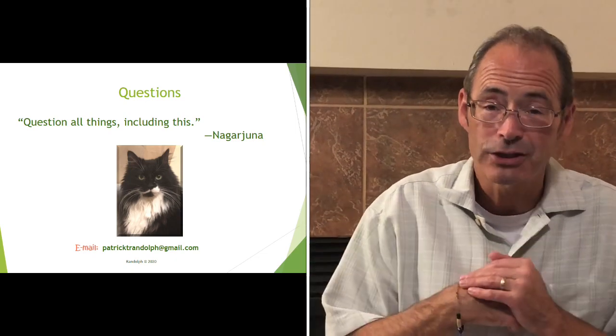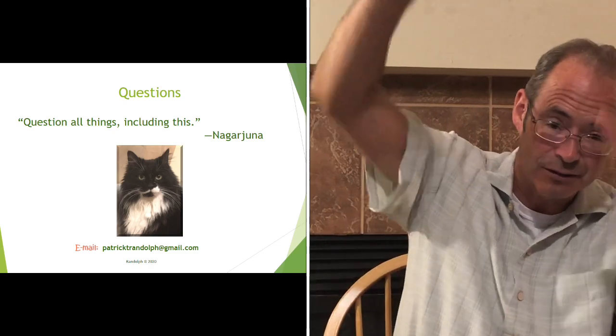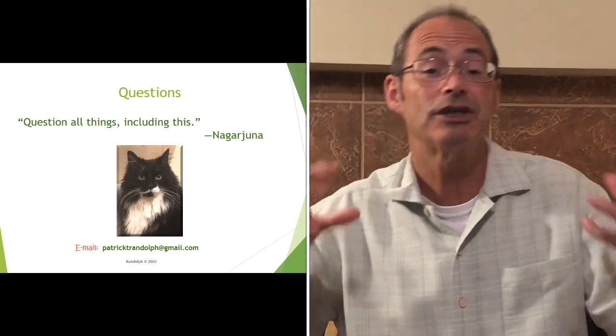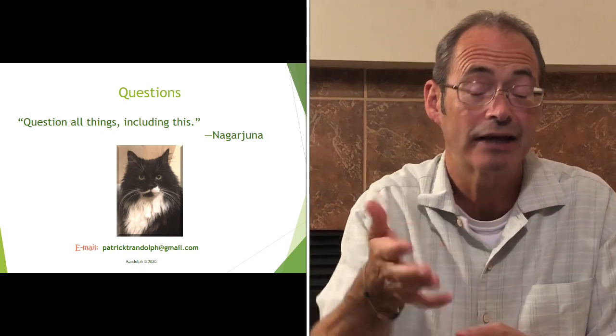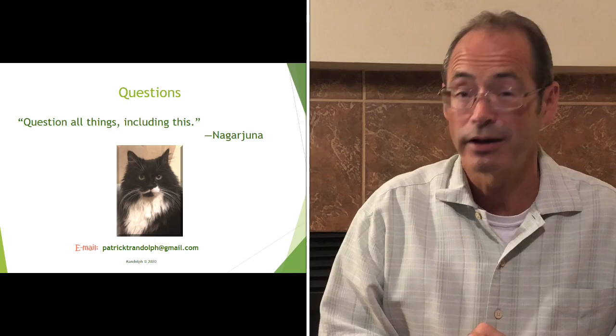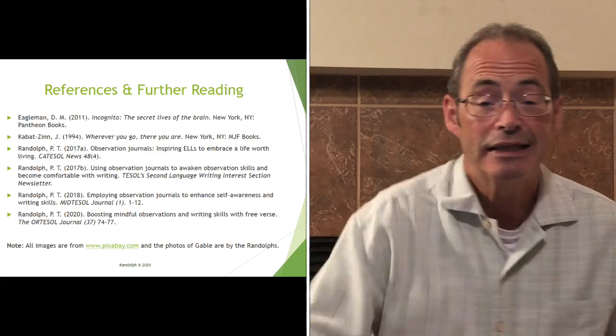If you have any questions about the observation journals, you can email me at patricktrandolph@gmail.com and I'm usually pretty good about answering right away. An overall summary: observation journals are just paragraphs with six categories that students can write about. You can do it at any level — and they're good not only for developing writing, but also for assimilating students into the host culture they're living in. There are just so many wonderful benefits, and most importantly, they develop observation skills and help students become more mindful.